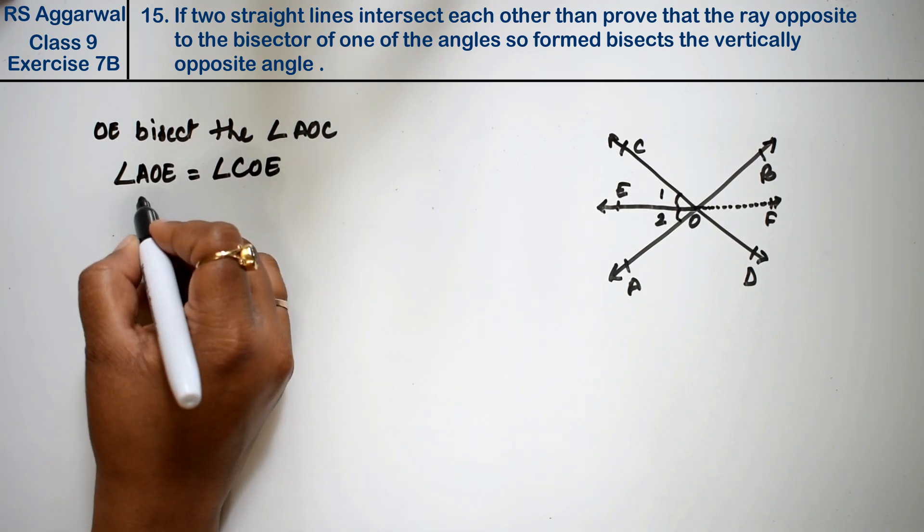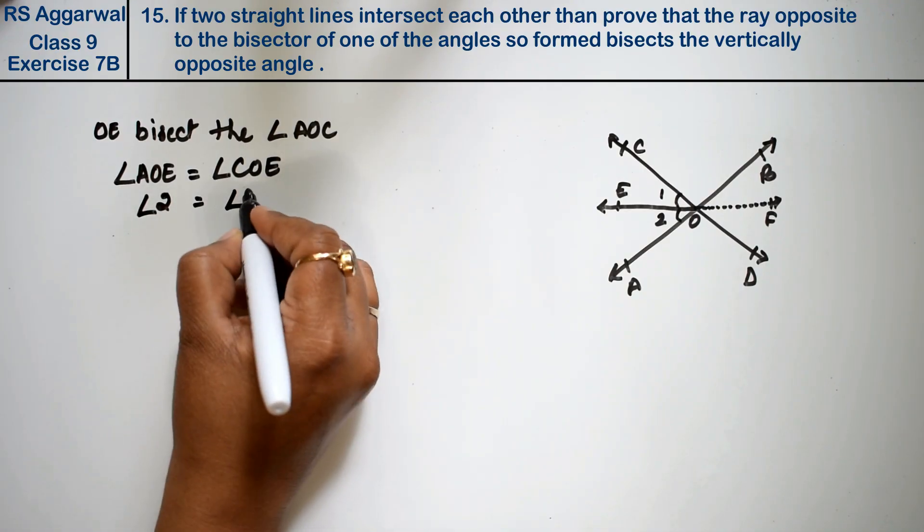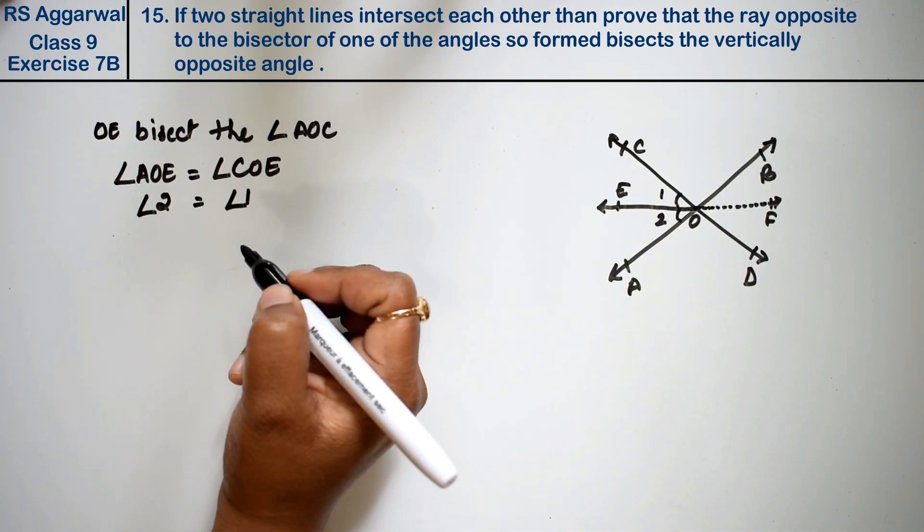AOE we have to consider as angle 2. Sorry, we want to consider this as angle 1. No matter - angle 1 is equal to angle 2.